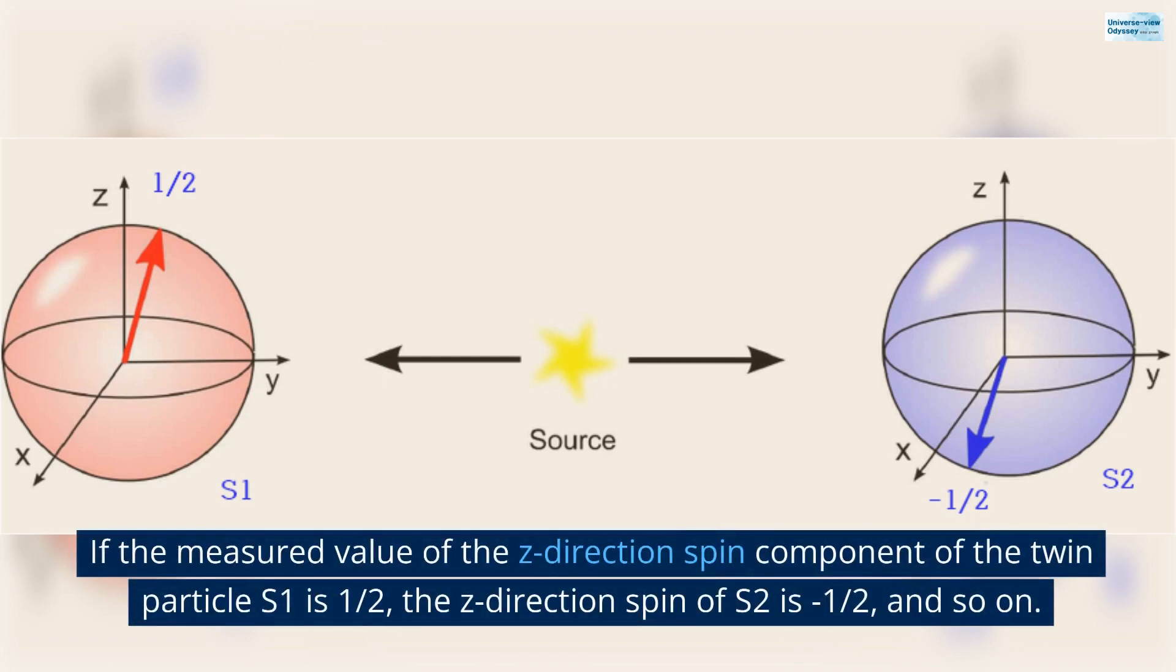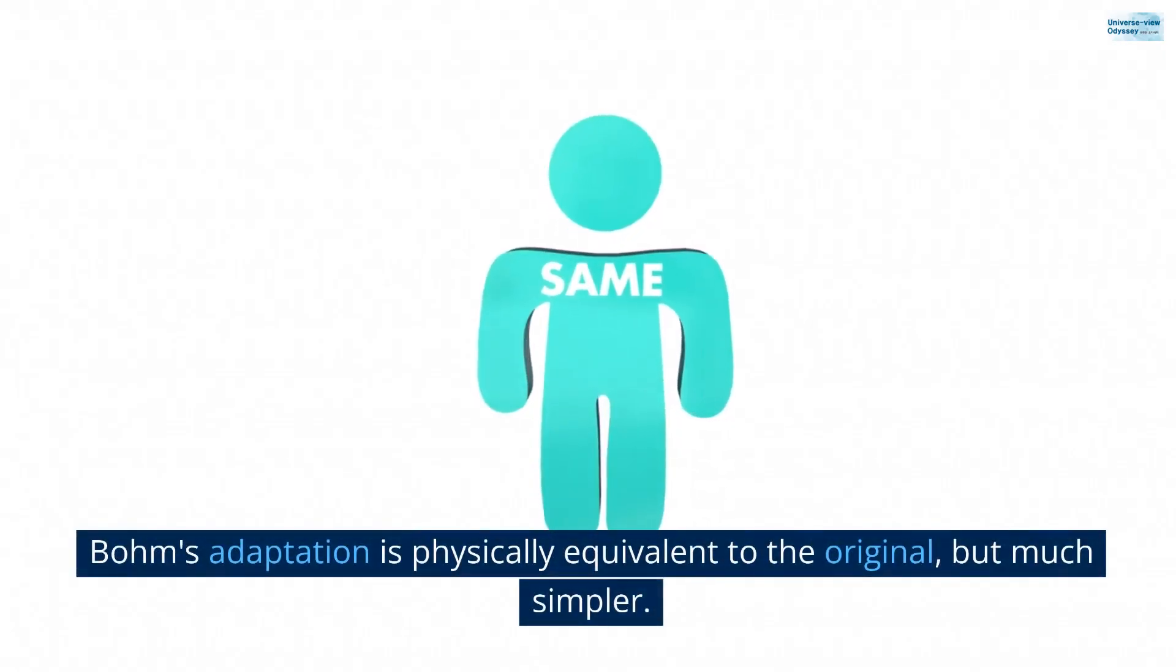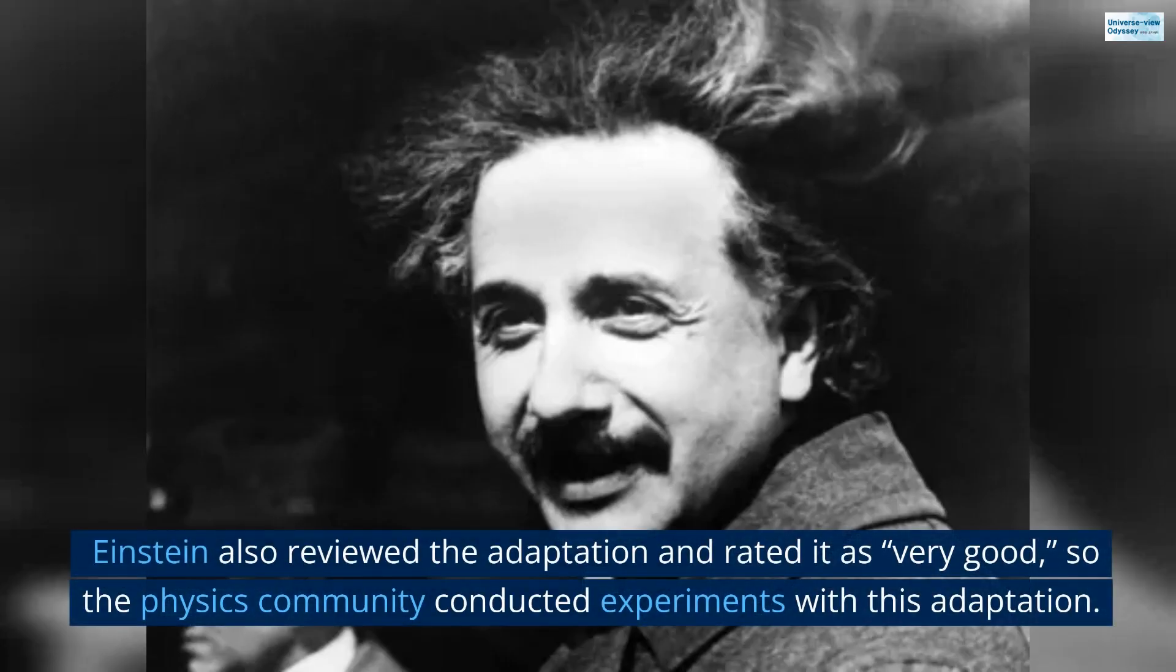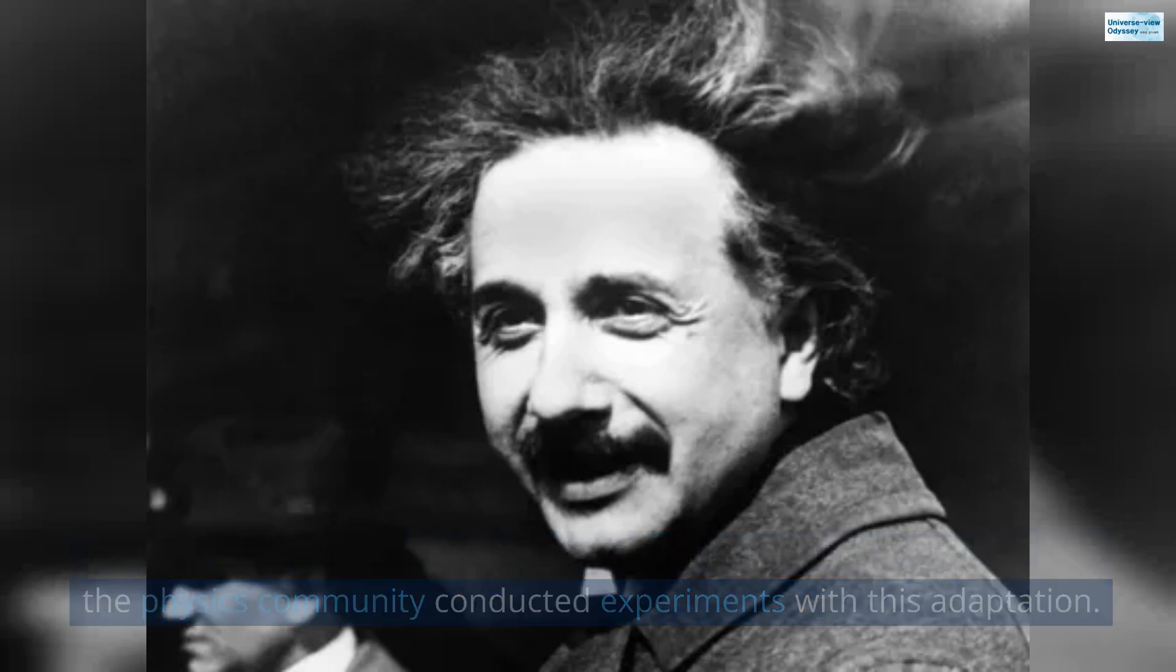If the measured value of the Z-direction spin component of the twin particle S1 is one half, the Z-direction spin of S2 is minus one half, and so on. Bohm's adaptation is physically equivalent to the original, but much simpler. Einstein also reviewed the adaptation and rated it as, very good. So the physics community conducted experiments with this adaptation.